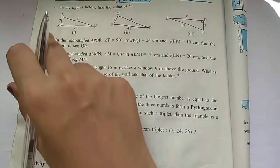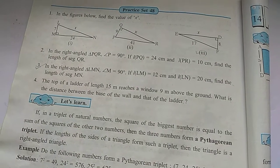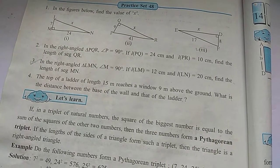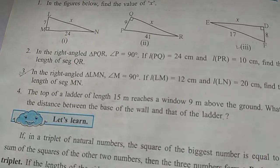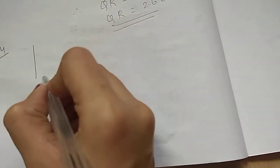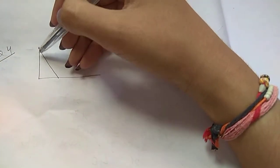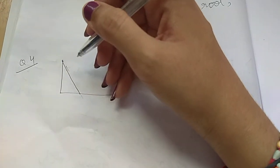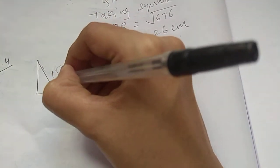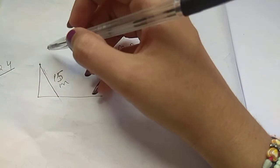Question number 3 is similar to question number 2, so it is for homework. Question number 4: the top of a ladder of length 15 meters reaches a window 9 meters above the ground. What is the distance between the base of the wall and the base of the ladder? Diagrammatically, this is the wall, this is the ground, and this is the ladder. The ladder of 15 meters length reaches a window 9 meters above the ground.